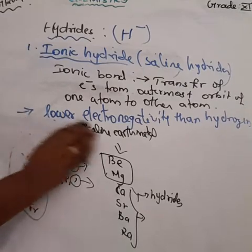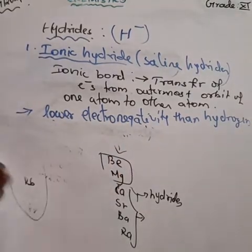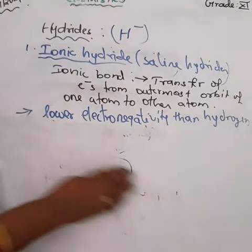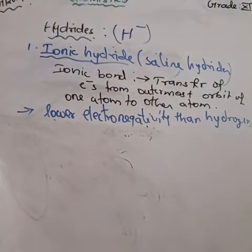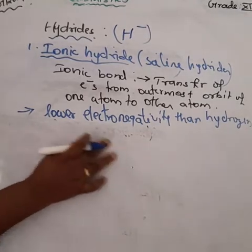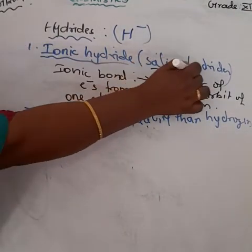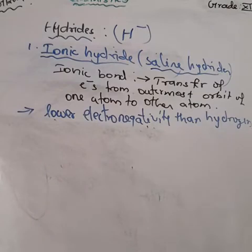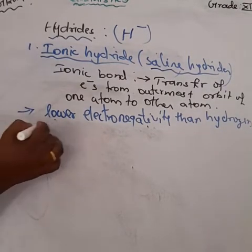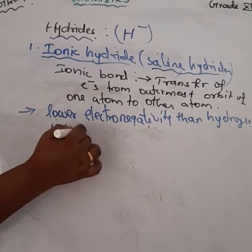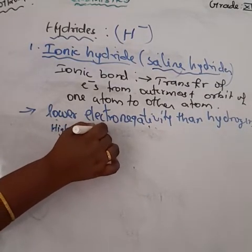Ionic hydrides can be prepared by the reaction of elements at about 400 degrees Celsius. These are salt-like — that is, saline hydrides — with high melting points and are white crystalline solids.